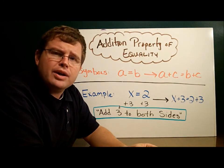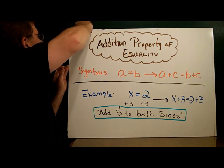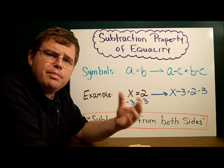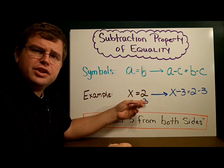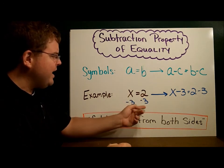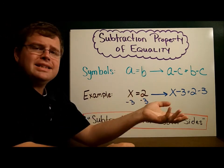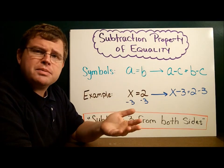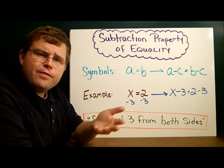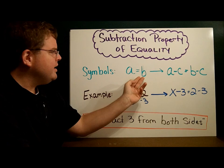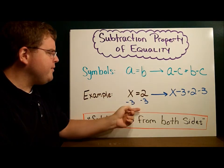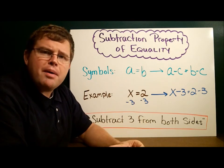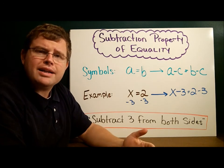The next property is the subtraction property of equality — same idea, but subtracting instead of adding. If x equals two, I can subtract three from each side: x minus three equals two minus three, like taking three pounds off each side of a scale. In symbolic notation, if a equals b, then a minus c equals b minus c.